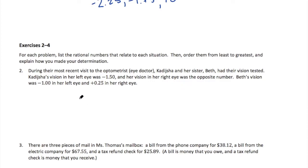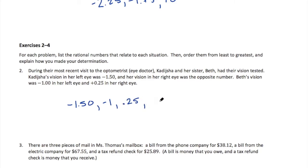The smallest number here is negative 1.5, then one of Beth's eyes is negative 1, then positive 0.25 in Beth's other eye, and then Kadisha's other eye — it's the opposite, so it's positive 1.50. So that's the order from least to greatest.